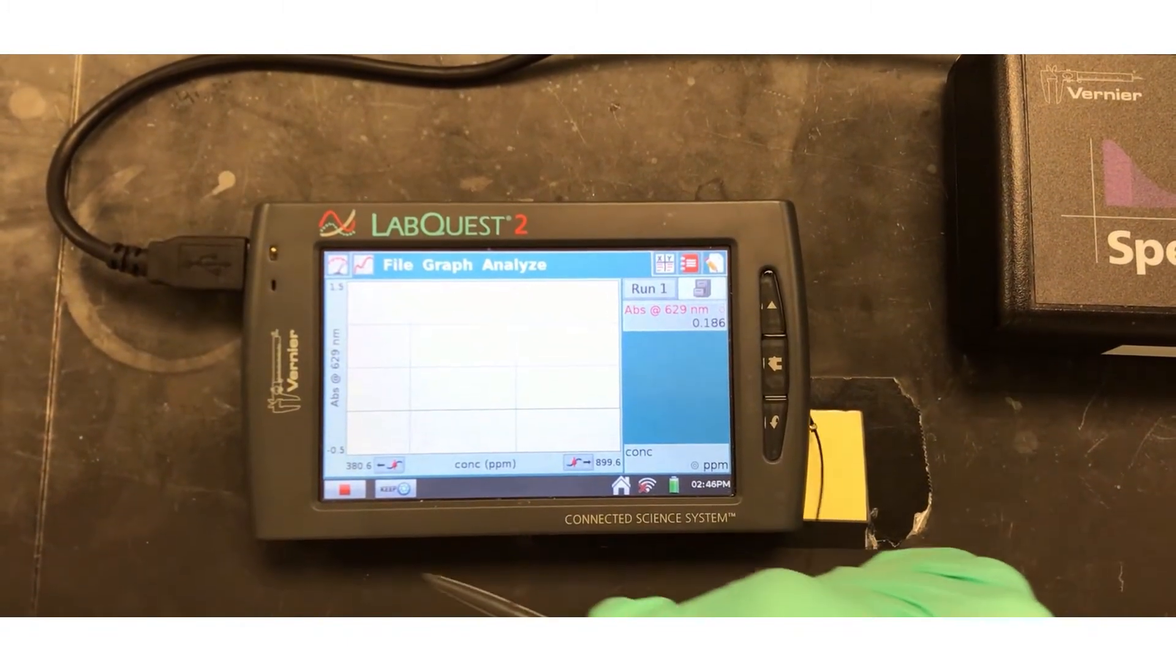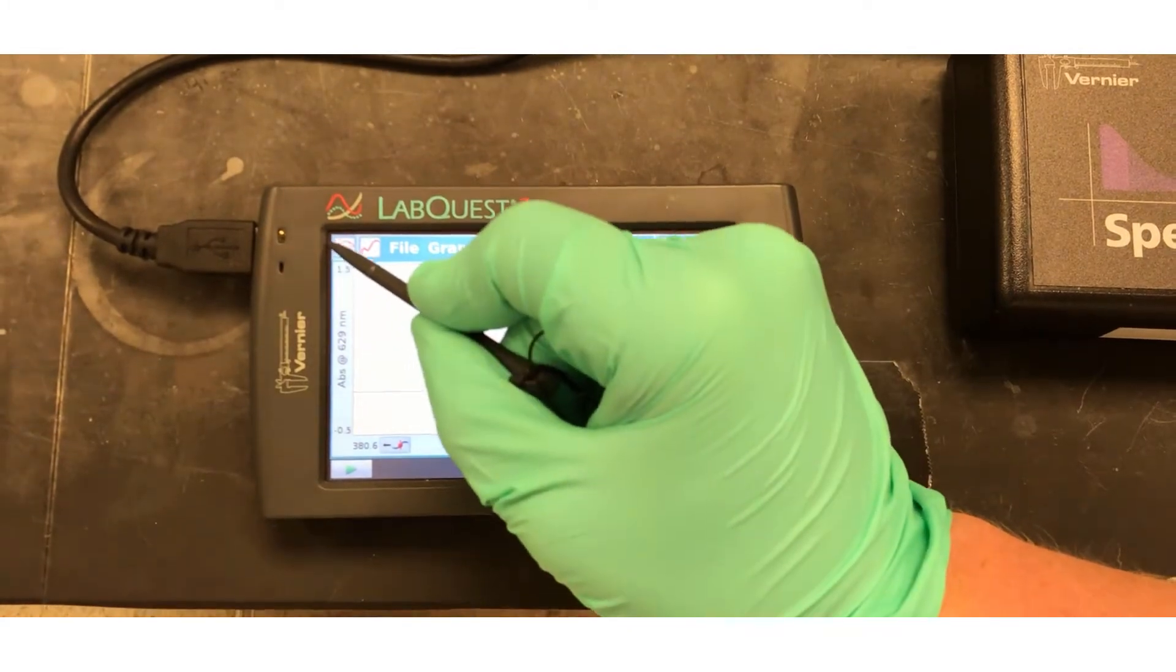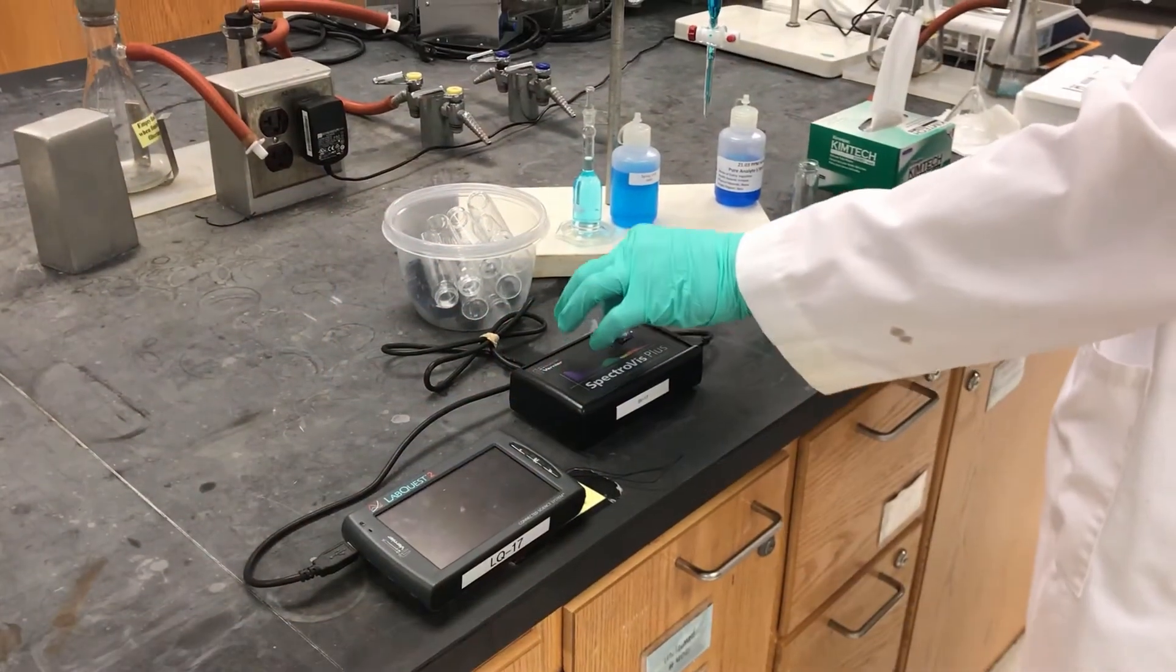The meter in the top left-hand corner displays the absorbance. An absorbance of 0.185 is below ideal for this experiment. Let's try one more sample.